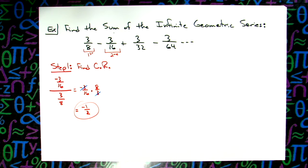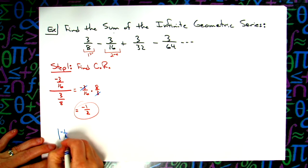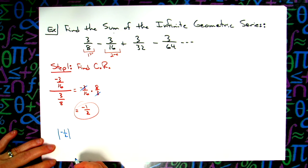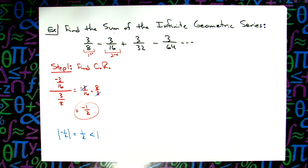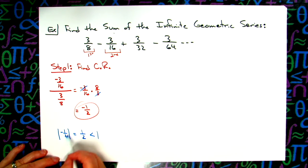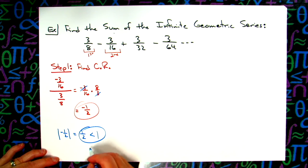Now, I need to decide whether the absolute value of that is less than 1 or greater than 1. So I'm going to do the absolute value of negative 1/2. Absolute value of negative 1/2 is 1/2, and 1/2 is less than 1, check.